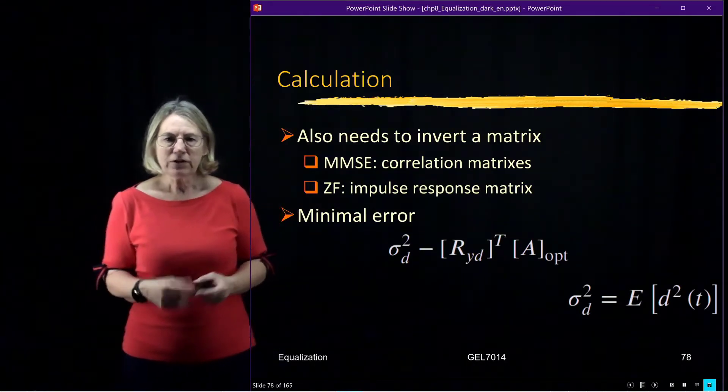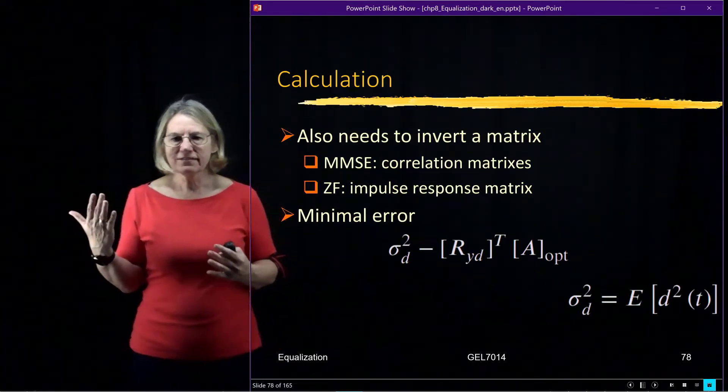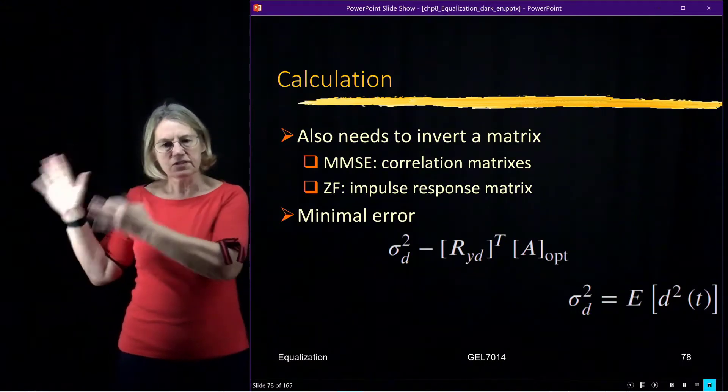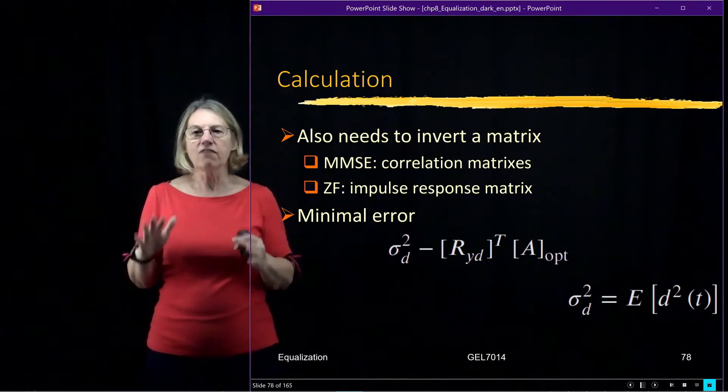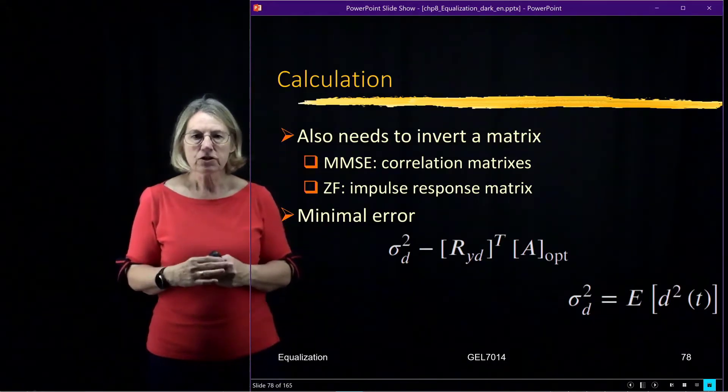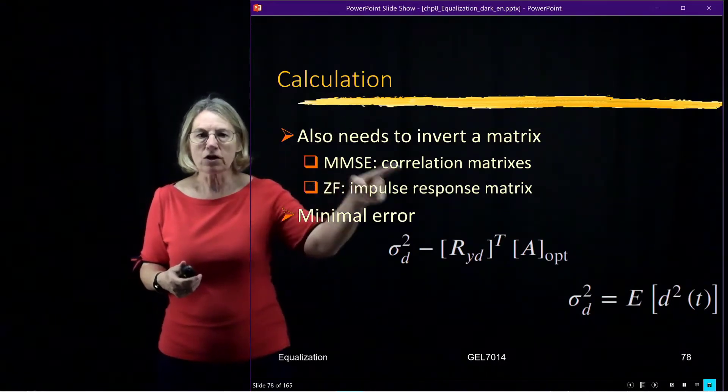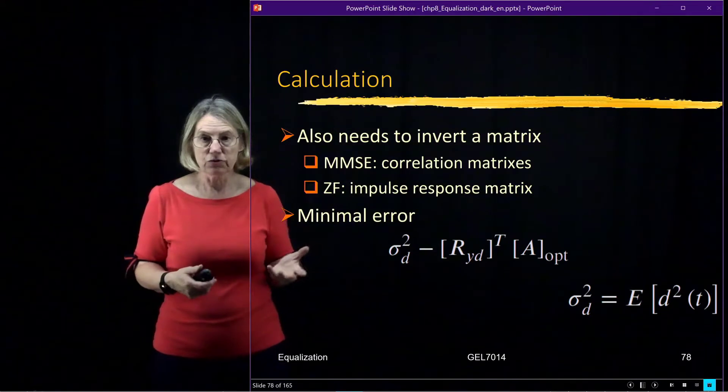So if we look at what's similar and non-similar between the zero-forcing and the MMSE, you'll remember both of them involved inverting a matrix. In terms of the MMSE, it was the autocorrelation matrix that we had to invert.